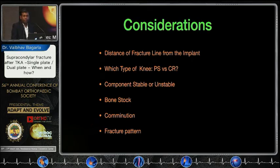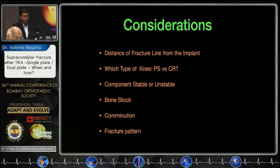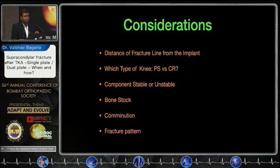As he rightly said, there are a few important considerations when we look at these supracondylar fractures. One is the distance of the fracture line from the implant, which type of implant is there — whether CR or PS — whether the component is stable or not, how is the bone stock, how is the comminution, and what is the fracture pattern. Before you make any judgment about what to do, you need to know these six basic pieces of information, and based on that you will take your decisions.